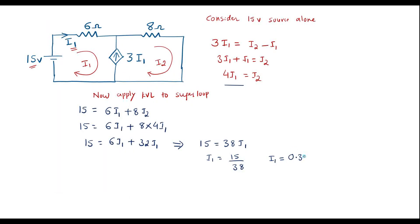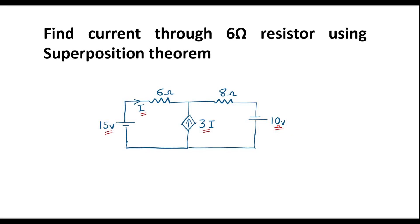So I1 equals 0.394 amps. That is, considering the 15 volt source alone, the current through the 6 ohm resistor is 0.394 amperes. Now I will consider the 10 volt source alone and short the 15 volt source. The dependent source 3I should be kept as it is.